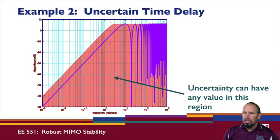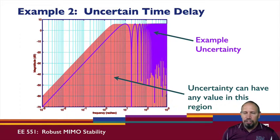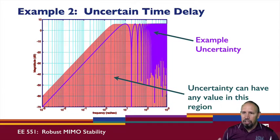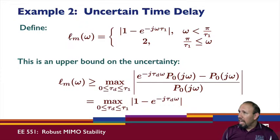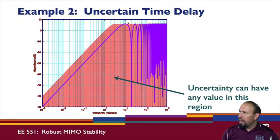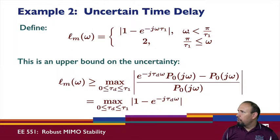The transfer function can take on any value in that pink region. For a particular value of tau_d the purple curve shows the result. It turns out the pink region can be described analytically as L_m: one expression covers frequencies up to pi/tau_1 and another covers frequencies above pi/tau_1. That's why the expression is split into two parts.